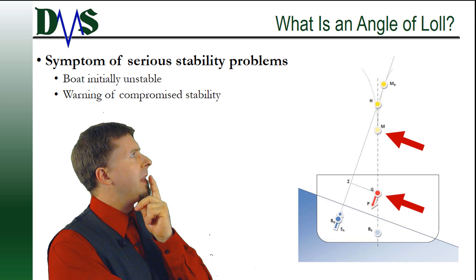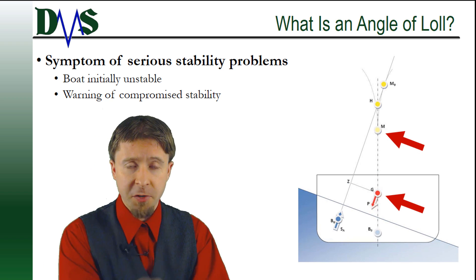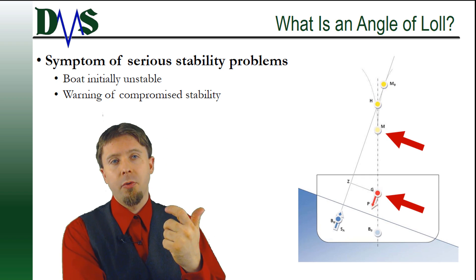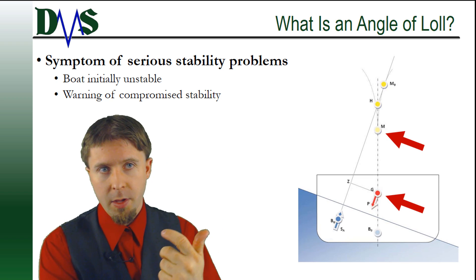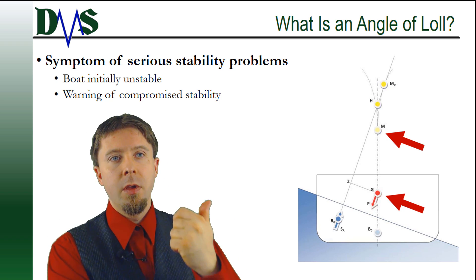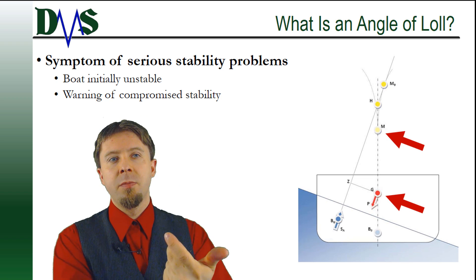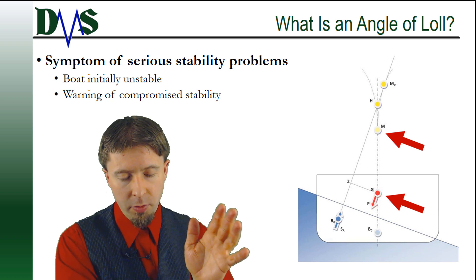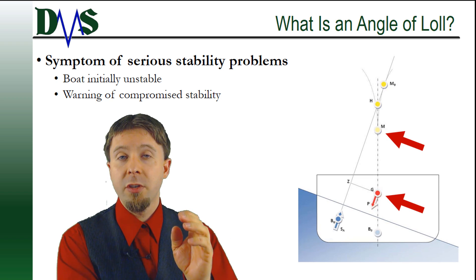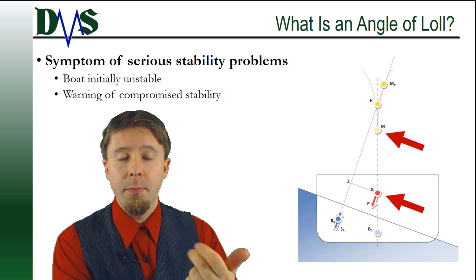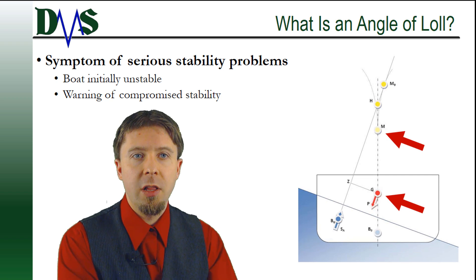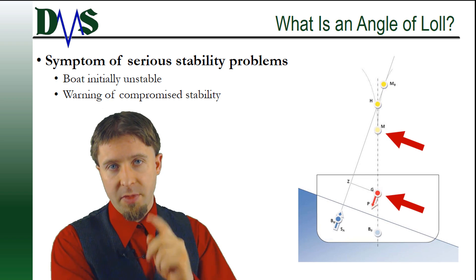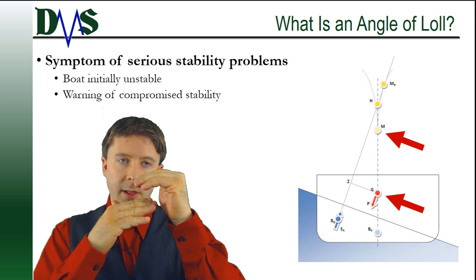What is an angle of lull? Stick with me for a minute because we have to dive a little into stability theory. Basic stability theory imagines a point called the metacenter — that's point M on this figure here — and that represents the stability of the ship as a physical distance. The important thing to remember is that point G, the ship's center of gravity, must always be vertically below the metacenter. So G must always be below M.